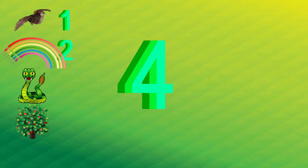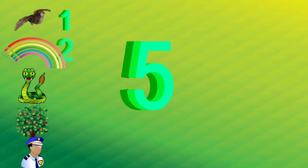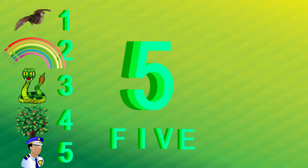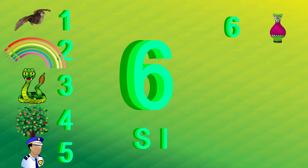1, 2, 3, 4 - F O U R. T for tree. 5 - 1, 2, 3, 4, 5 - F I V E. U for uniform. 6 - 1, 2, 3, 4, 5, 6 - S I X. V for vase.